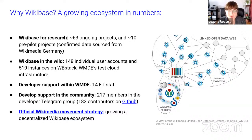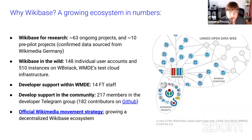On the community side, Wikibase is a sustainable, growing ecosystem. Official data from Wikimedia Germany shows 63 ongoing research projects across different institutions worldwide and 10 pre-pilot projects. In the broader Wikibase-in-the-wild context, there are at least 148 individual user accounts and 510 instances on WB Stack — Wikimedia Germany's test cloud infrastructure where users can launch Wikibases for a variety of reasons. Not all 510 instances can be confirmed as research use, but a large number likely are.